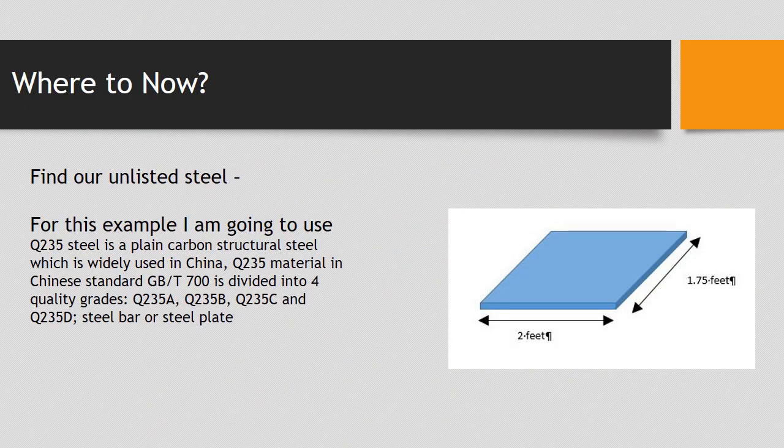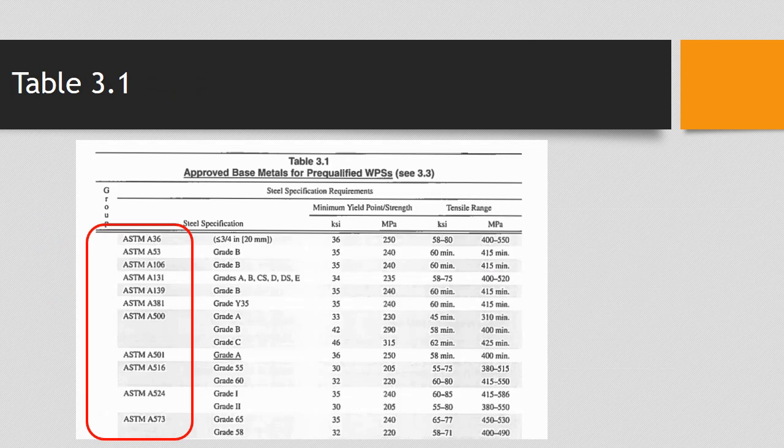For our unlisted steel in this example, I'm going to use Q235. It's a plain carbon structural steel widely used in China. It's from the Chinese standard GB/T700. It's divided into four grades. And it's either a steel bar or a steel plate. So I'm just going to use this one as an example. So on our paragraph, it said we need to be able to compare our Q235 to a material that's listed in table 3.1 of AWS D1.1. So how do I do that?